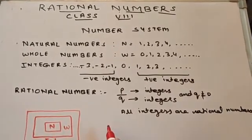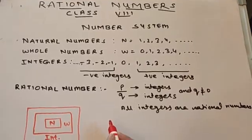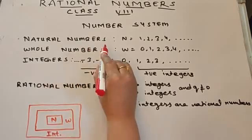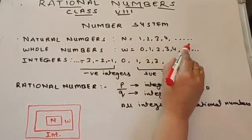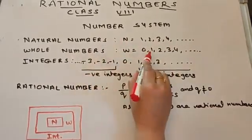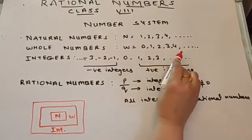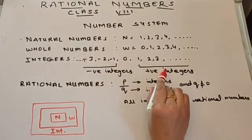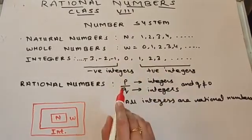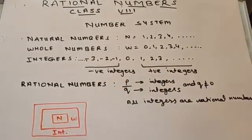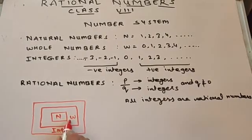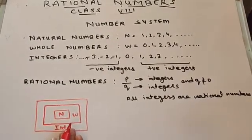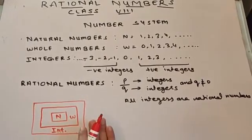In our number system, there are basic names: Natural Numbers, Whole Numbers, and Integers. Natural Numbers are 1, 2, 3 and so on. Whole Numbers are 0, 1, 2, 3 and so on. Integers are negative numbers, 0 and positive numbers. In this set of numbers, the biggest is Integers — so Integers cover Whole Numbers and Natural Numbers both. This is the basic understanding with which we are already familiar.